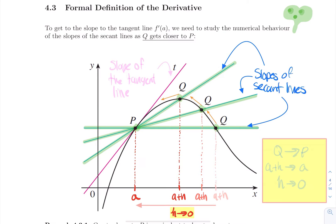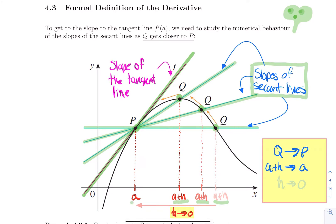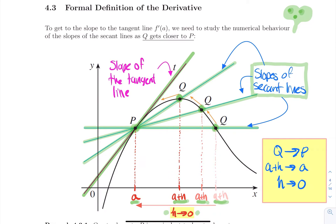This is where we want to go eventually. Here are a couple of remarks that are really crucial. We start with the slopes of the secant lines, and as q gets closer to p, these slopes are getting closer to the slope we want to define — the slope of the tangent line. As q gets closer to p, this is equivalent to saying that the x values corresponding to those points, a plus h, are getting closer to the x value of our point p, which is a. So when q approaches p, that's the same as saying a plus h approaches a, or equivalently, h is getting closer to zero.